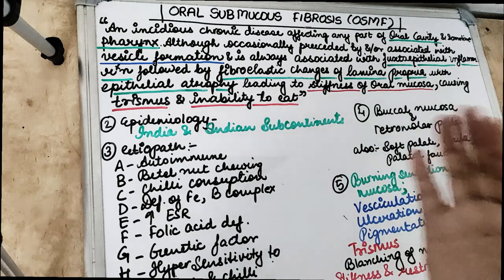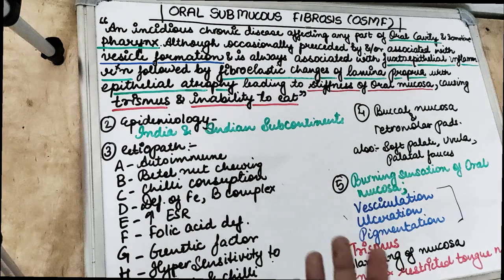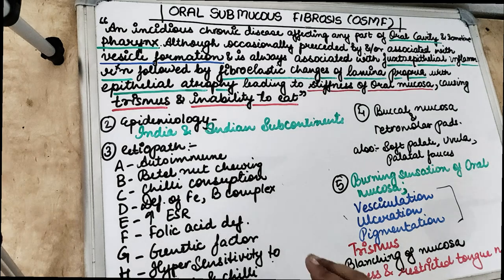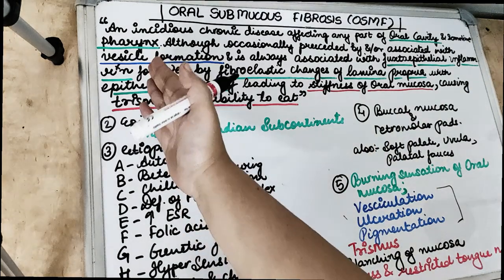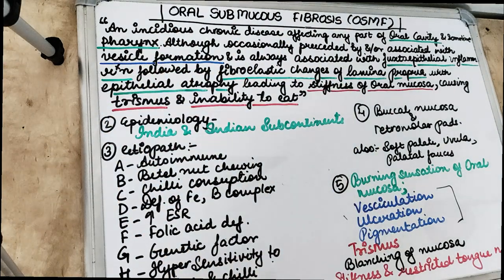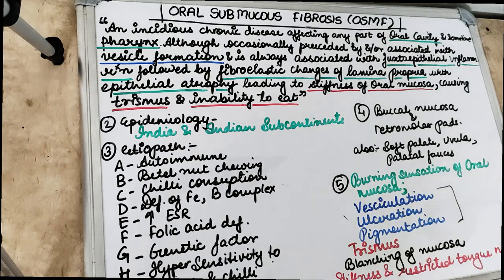The burning sensation is aggravated by spicy food. After that, the patient will either hypersalivate or there will be xerostomia. The most common features are vesiculation, ulceration, pigmentation, recurring stomatitis, and defective gustatory sensations. Late symptoms are trismus — inability to open the mouth completely — and stiffness of the oral mucosa. There can be difficulty in swallowing if the pharynx or esophagus is involved, difficulty in protruding the tongue, and pain referred to the ear due to occlusion of the Eustachian tube, causing ear pain or even deafness.